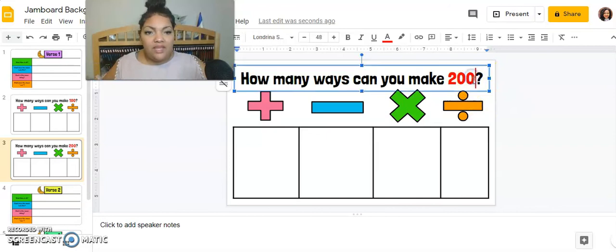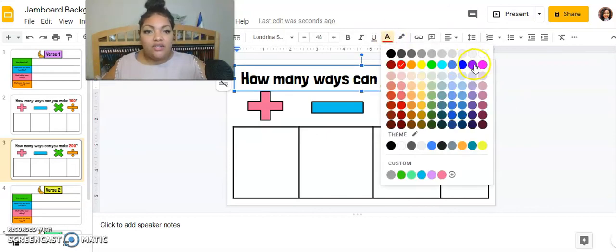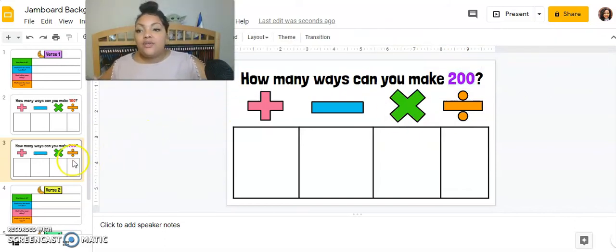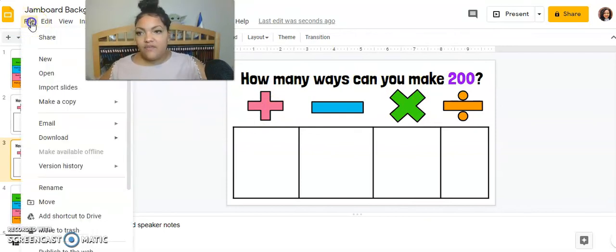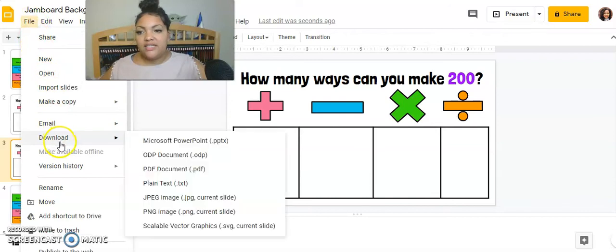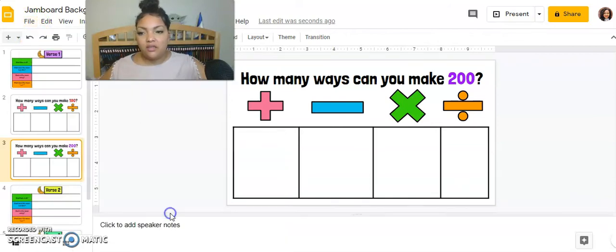And we'll do the same type thing. I'm very visual. I know my kids are too. So I like to change the colors to make it clear that this is a totally different slide. So now, how many ways can you make 200? I'm going to select this slide, file, download as a PNG. There we go. It is downloaded.